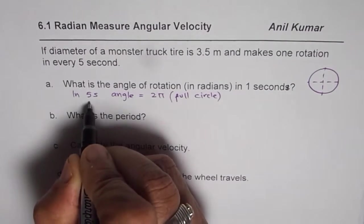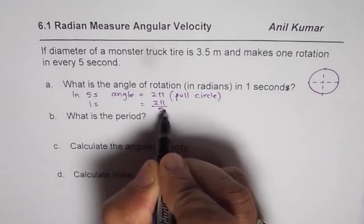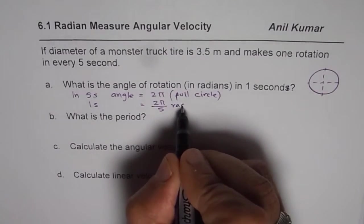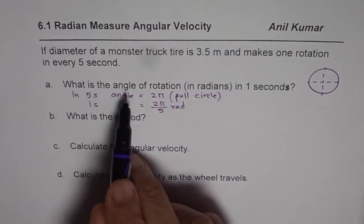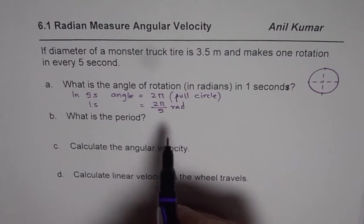Now, in one second, it should be 2 pi divided by five. So that much is the angle, which is in radians. That is the answer. What is the angle of rotation in one second? It is 2 pi by 5 radians.